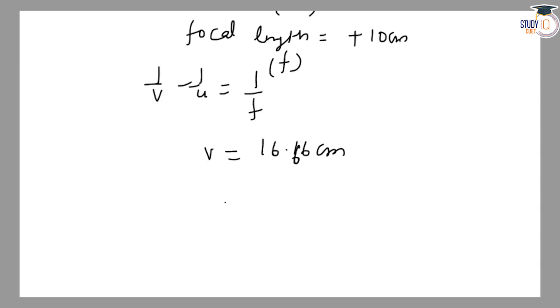What is magnification? Magnification m equals minus image distance V upon object distance U. Here, image distance is 16.66 cm and U is 25 cm, so the value is -0.66.